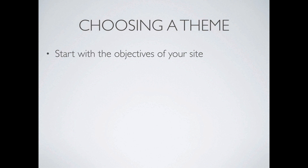Getting on to choosing a theme — how do we actually go about this process? I generally suggest that you start with the objective of your site. Before you even go and look at a theme, think about what you want your site to do. Is it going to be just a blog? Is it going to be promoting your products and services? Is it going to be a community space? Once you're clearer about what you're trying to achieve, then when you start looking at themes, you can very quickly rule them in or out based on whether they're going to meet that objective.